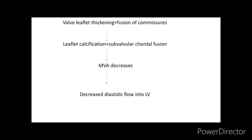The pathophysiology of rheumatic mitral stenosis begins with valve leaflet thickening and fusion of the commissures. Later, there is additional leaflet calcification and subvalvular chordal fusion. All these changes lead to a decrease in the mitral valve area, which results in decreased diastolic flow into the left ventricle.